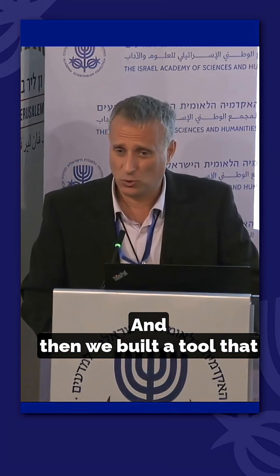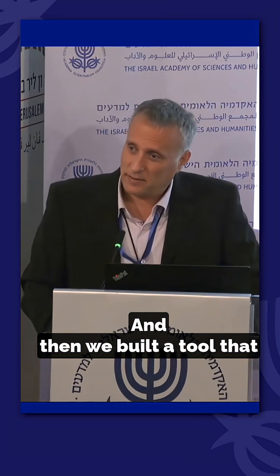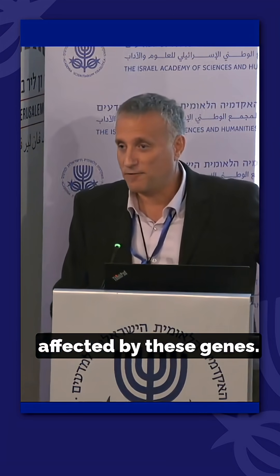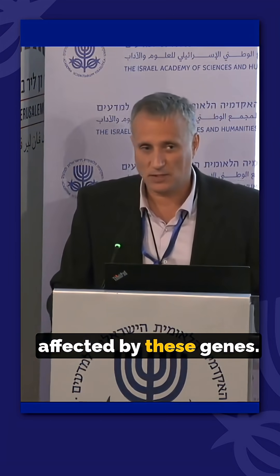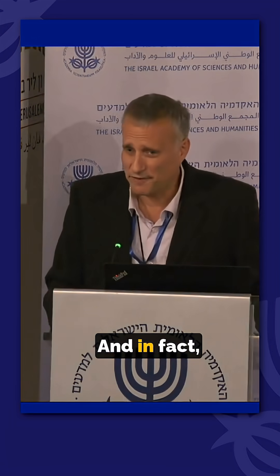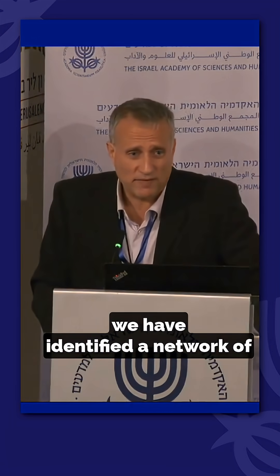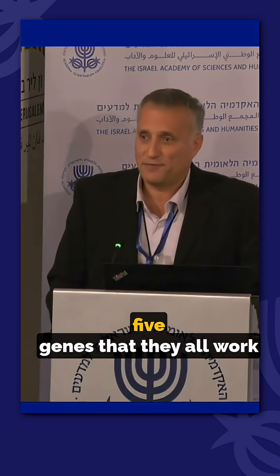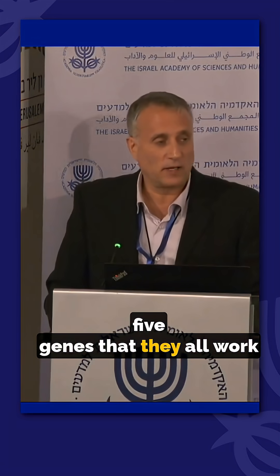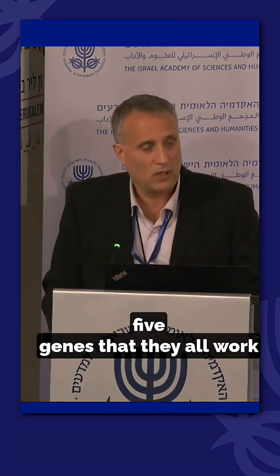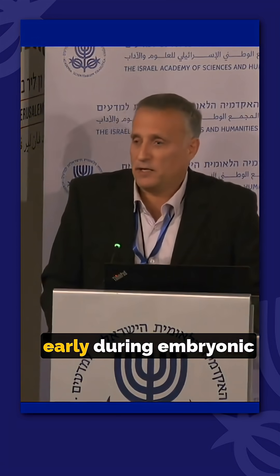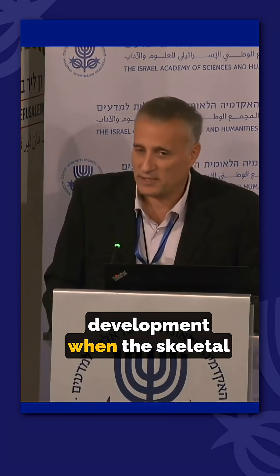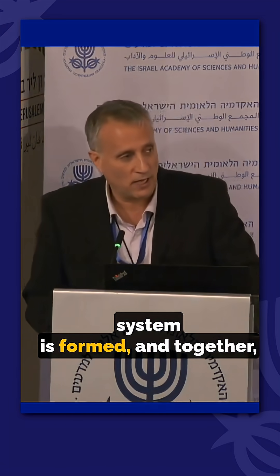We built a tool that tells us which body parts are affected by these genes. We identified a network of five genes that all work early during embryonic development when the skeletal system is formed.